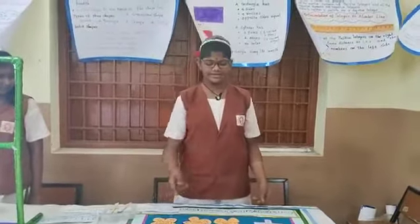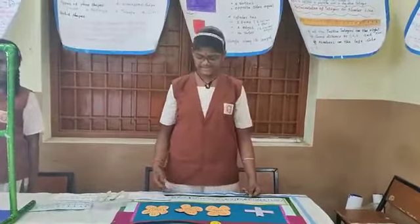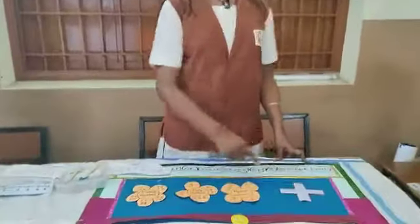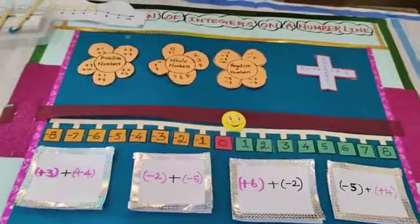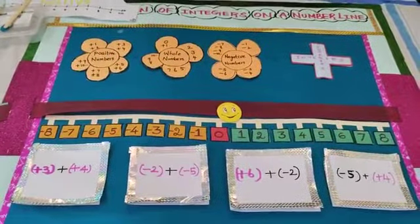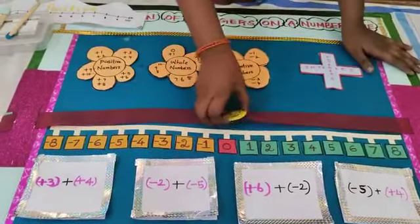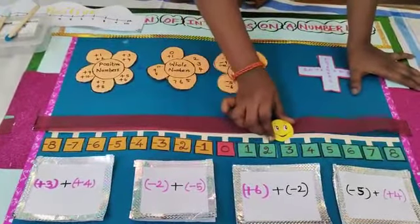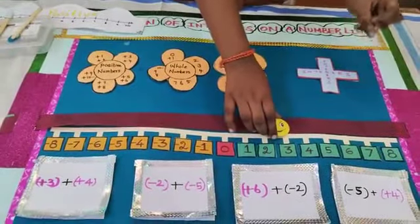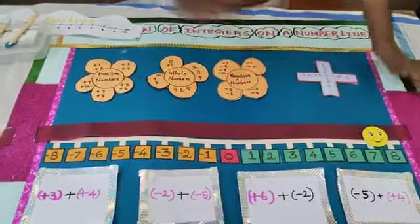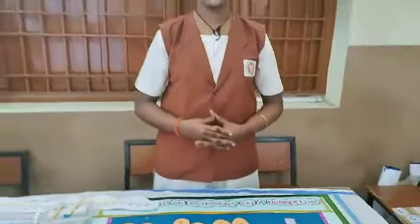This is the number line. The numbers are marked with points at equal distances. The right side of 0 contains positive numbers. The left side of 0 contains negative numbers. Let us move first 3 steps: 1, 2, 3. Then we move 5 more steps: 1, 2, 3, 4, 5. So the answer is 3 plus 5 equals 8.